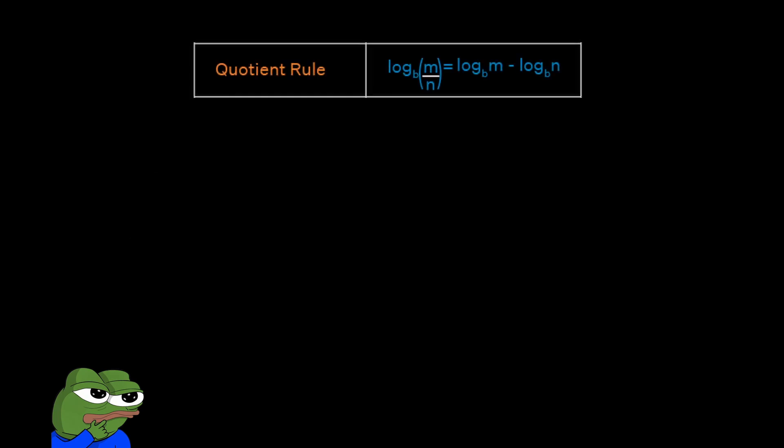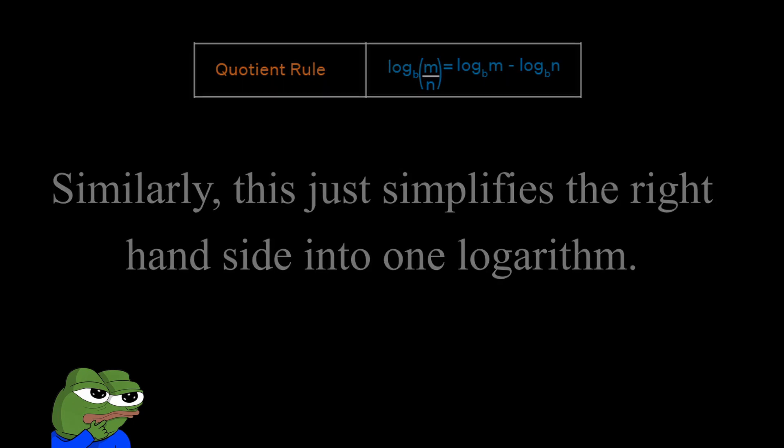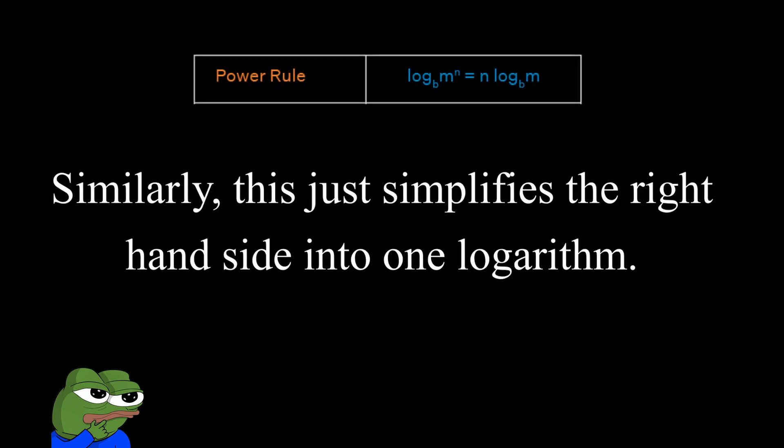Similarly, our quotient rule says that if you have log base b of m minus log base b of n, then you can also simplify this to one expression, this time giving you log base b of m over n. Now, the power rule. If you have log base b of m to the n, you can actually pull out the exponent of m to be a coefficient. So this becomes n log base b of m.